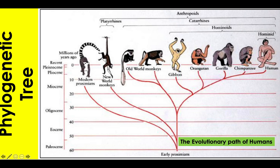When you see branching occurring in the tree, that represents speciation occurring — a single ancestral lineage giving rise to two or more daughter lineages. Each lineage has a part of its history that is unique and parts that are shared with other lineages. This phylogenetic tree is showing us the evolutionary path of humans as well as other primates.